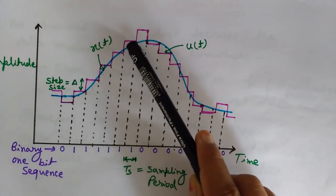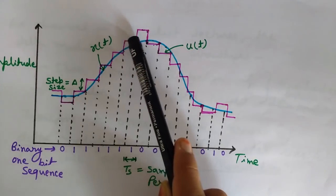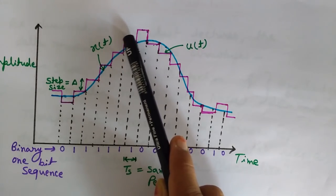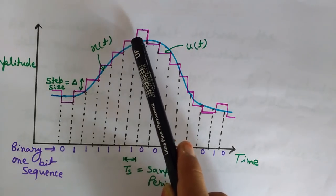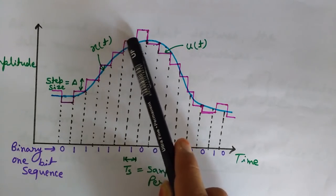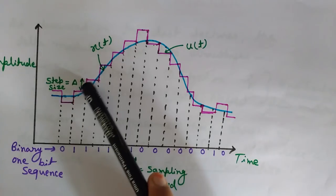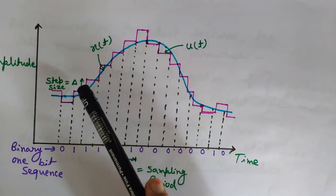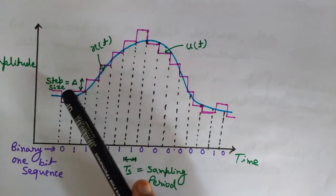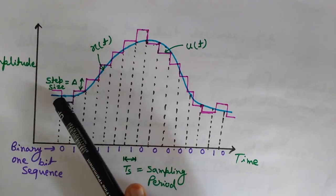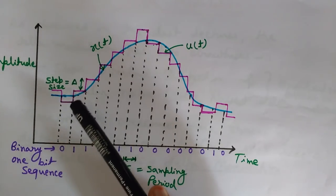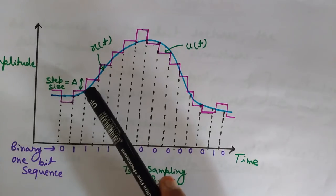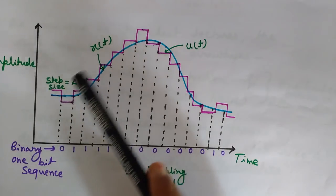These are the sampled values of the analog signal, and these flat or horizontal pink lines are the approximated values. This part has been approximated by this line, this part has been approximated by this line, and this part has been approximated by this pink line.